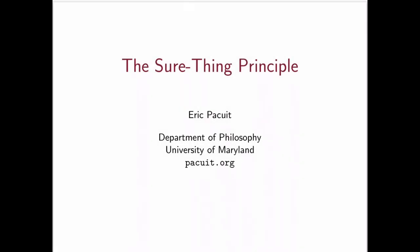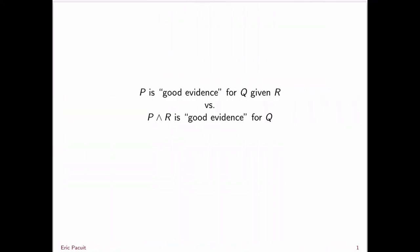In this lecture, I want to look at a very important principle of probabilistic reasoning known as the Sure Thing Principle. But before we do that, I want to highlight some terminology I'm going to use. On the one hand, I'm going to say that P is good evidence for Q given R. And on the other hand, sometimes I'll say P and R is good evidence for Q.